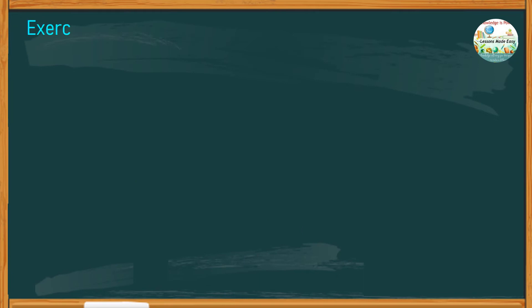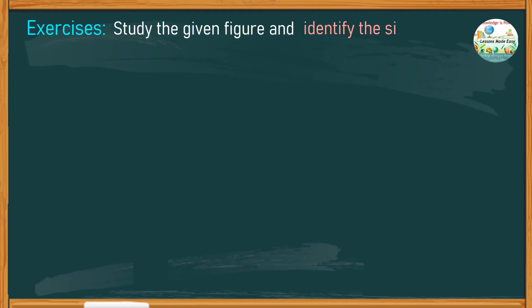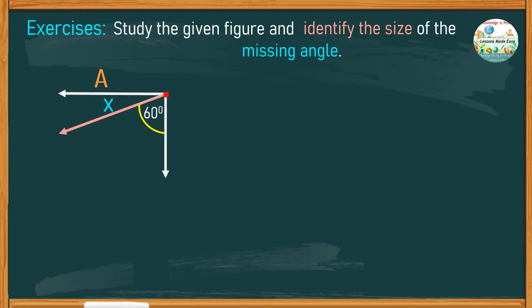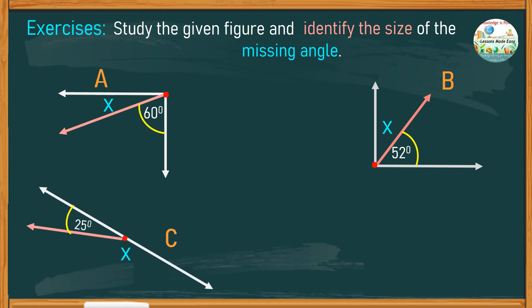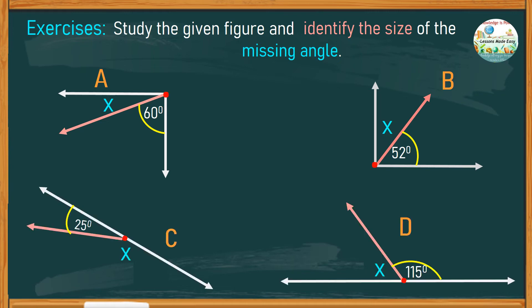Let's do some simple exercises. Study the given figure and identify the size of the missing angle. We have figure A, figure B, figure C, and figure D. You can always pause this video if you need more time to think. But if you're ready, let's go ahead and check your answers. Take note that the first two figures are complementary angles while the other two are supplementary angles.